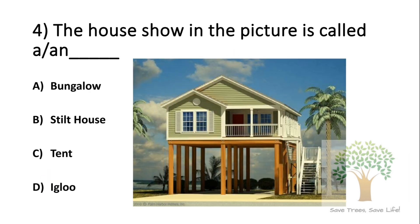Question number 4. The house shown in the picture is called — Option A: bungalow. Option B: stilt house. Option C: tent. Option D: igloo. The answer is Option B, stilt house.